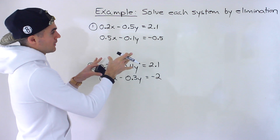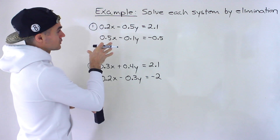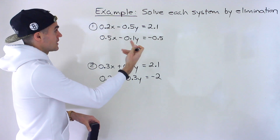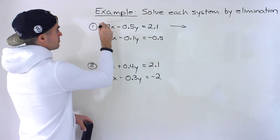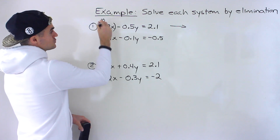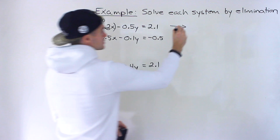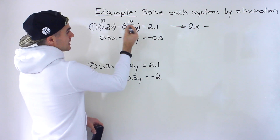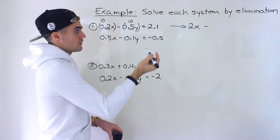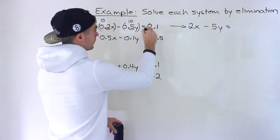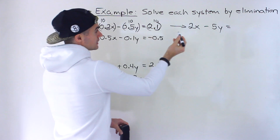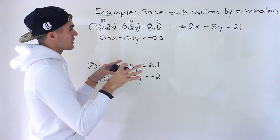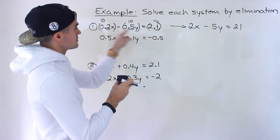What can we multiply everything by to get rid of the decimals? Well, notice we can multiply everything by 10. What we do to one side, we have to do to the other side. So, multiplying everything by 10 in the first equation: 0.2x times 10 — you just move the decimal place over once — gives us 2x. Then minus 10 times 0.5 gives us 5y. And 2.1 times 10 gives us 21.